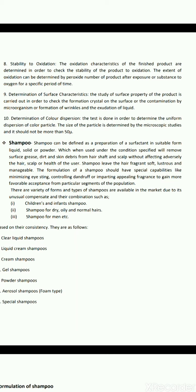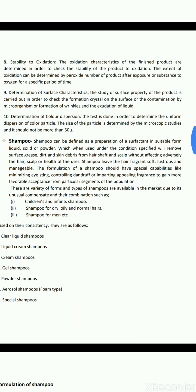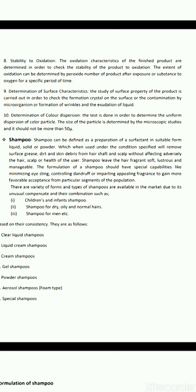The second cosmetic product is shampoo. Shampoo is defined as a preparation of a surfactant in suitable form — liquid, solid or powder — which when used under specified conditions will remove surface grease, dirt and skin debris from the hair shaft and scalp without adversely affecting the hair, scalp or health of the user. Shampoo leaves the hair coloured, fragrant, soft, lustrous and manageable. Its formulation should minimise eye sting, control dandruff or impart appealing fragrance. Various types exist including children's and infant shampoo, shampoo for dry, oily and normal hair, and shampoo for men.